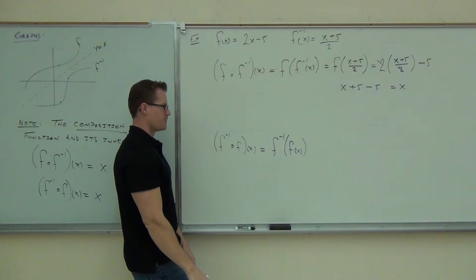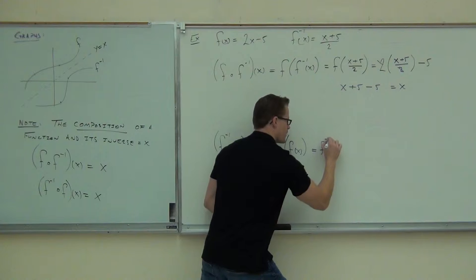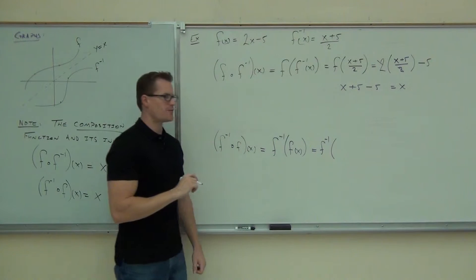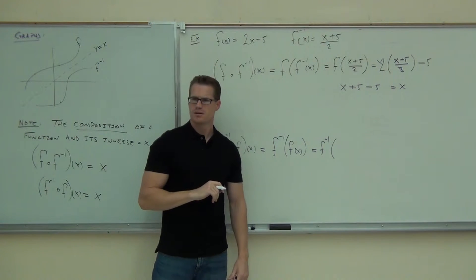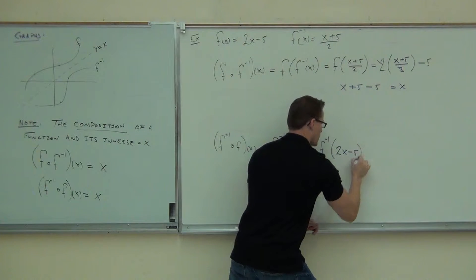F inverse of f of x. That's the same thing as this. F inverse of f of x. We leave our f inverse and in the parentheses we put our f. What's our f of x again? So, we're going to put our 2x minus 5 inside of our parentheses.